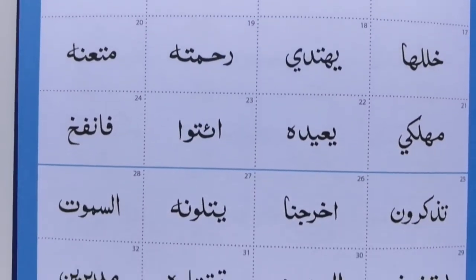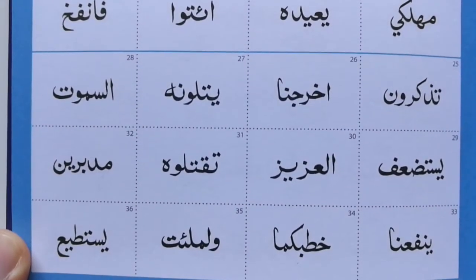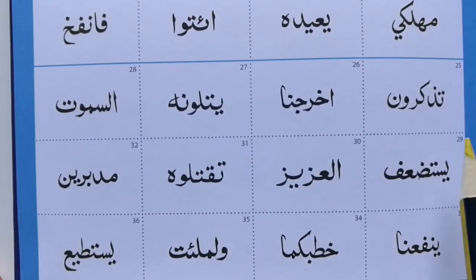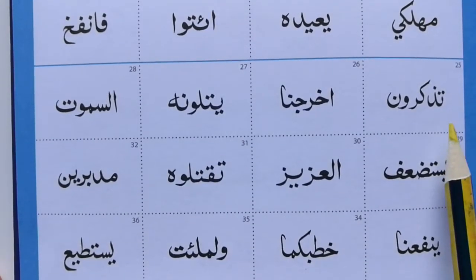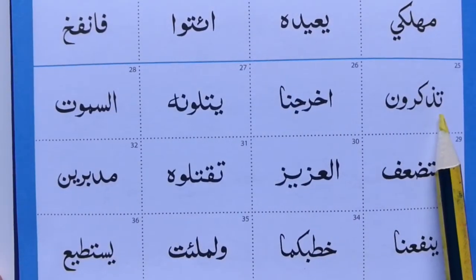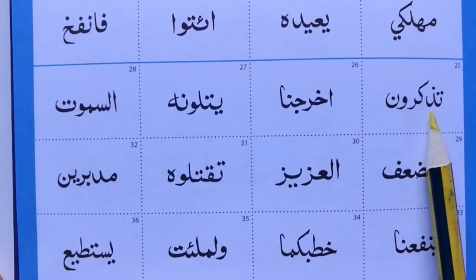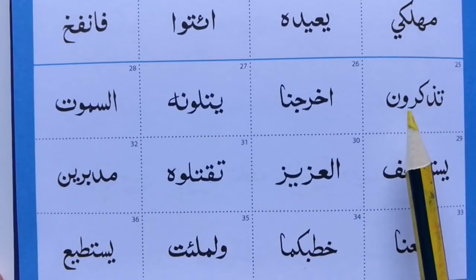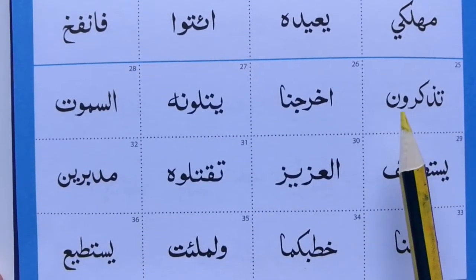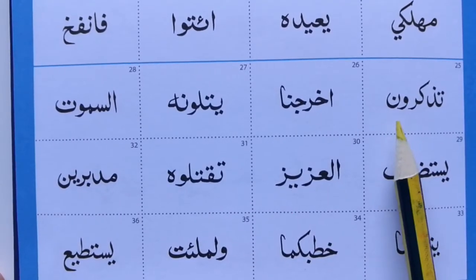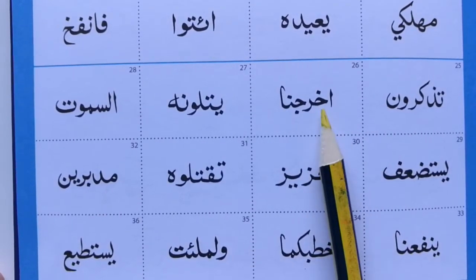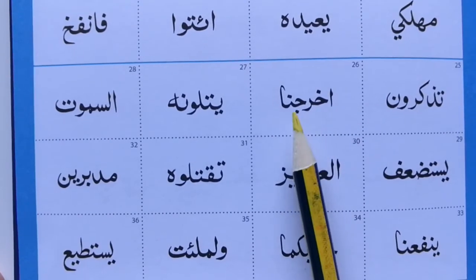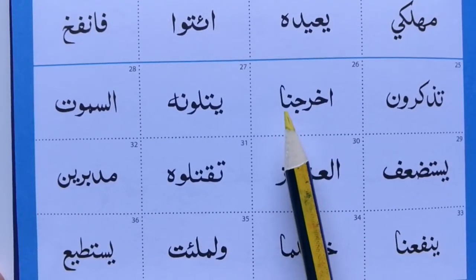And the last three lines — these get a little bit more complicated, so bear with me. Ta, Thal, Ka, Ra, Waaw, Noon. Alif, Kha, Ra, Jeeb, Noon, Alif.